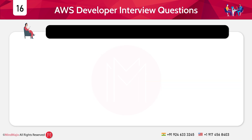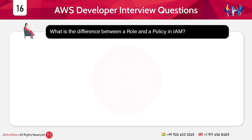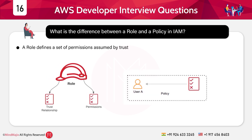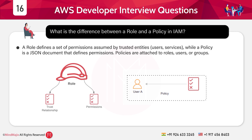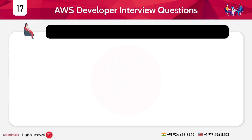Next category in the intermediate level: general or most frequently asked questions. Question 16: What is the difference between a role and a policy in IAM? Answer: A role defines a set of permissions assumed by trusted entities — users and services — while a policy is a JSON document that defines permissions. Policies are attached to roles, users, or groups.